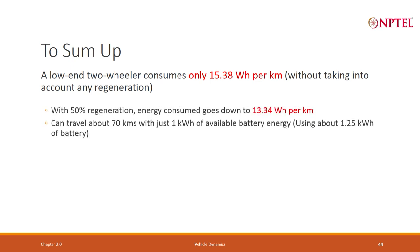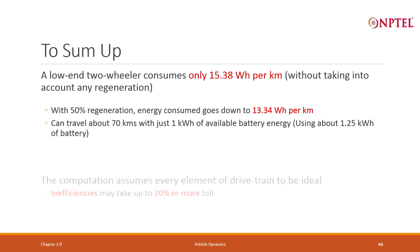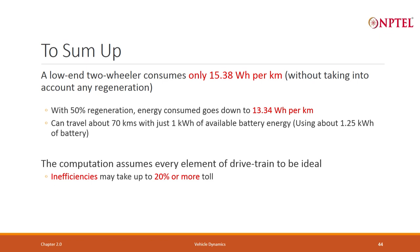With 50 percent regeneration, the vehicle can travel 70 km per kilowatt-hour. Assuming 1.25 kWh is the actual battery and we are only using 1 kWh of that, it can give 70 km with regeneration. But computation assumes every element of the drive is ideal — inefficiencies may add up to around 20 percent — and it does not account for auxiliary energy used.